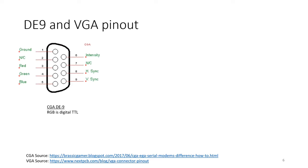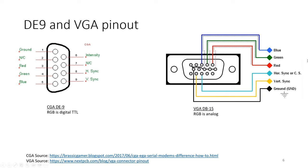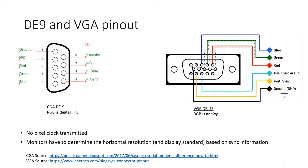For the DE9 pinout, you can see the three color values, the ground, and the vertical sync and horizontal sync signals - this is how the monitor knows where to go to the next line and next screen. For the VGA port, similar: red, green, blue, horizontal sync, vertical sync. The difference is in the RGB data. For DE9, it's digital TTL - just on and off. For VGA, it's an analog value. In both cases, there is no pixel clock transmitted, so the monitor has to guess the resolution based on the timings of horizontal and vertical signals.